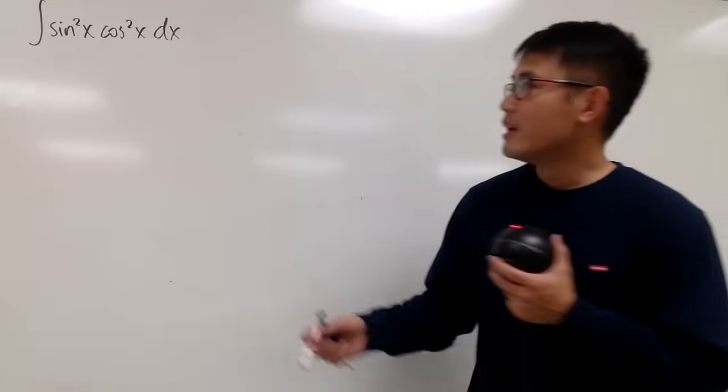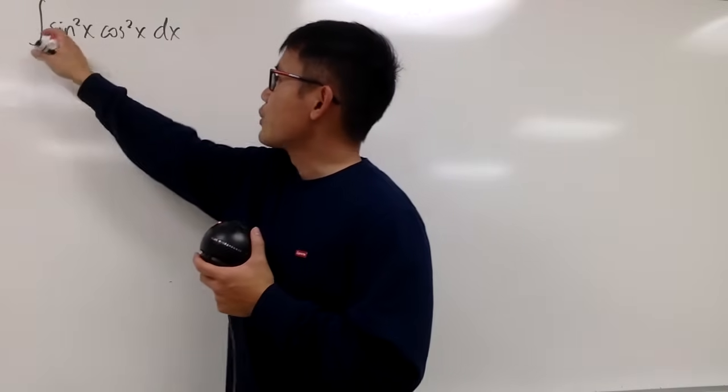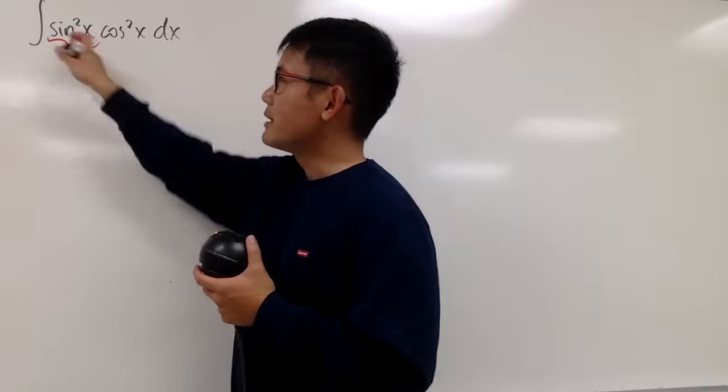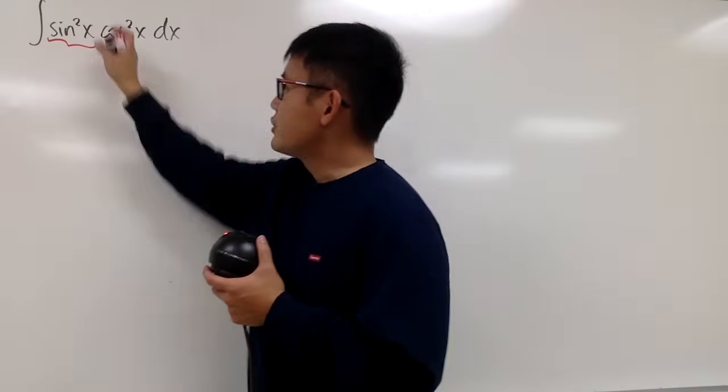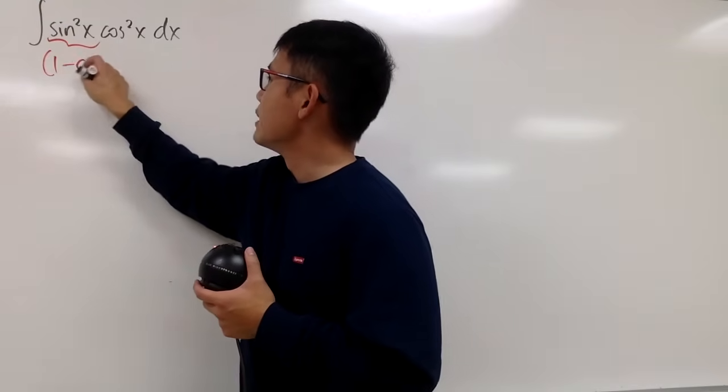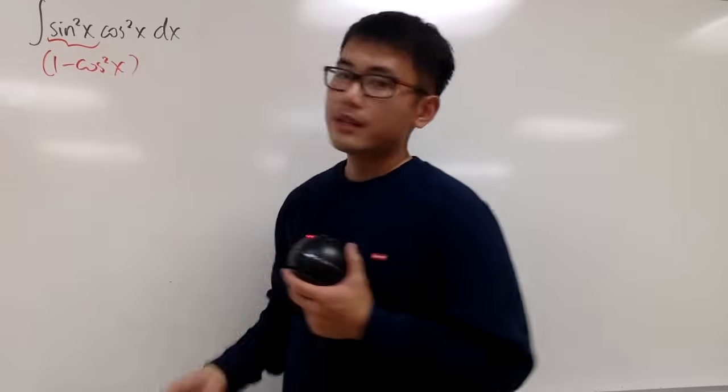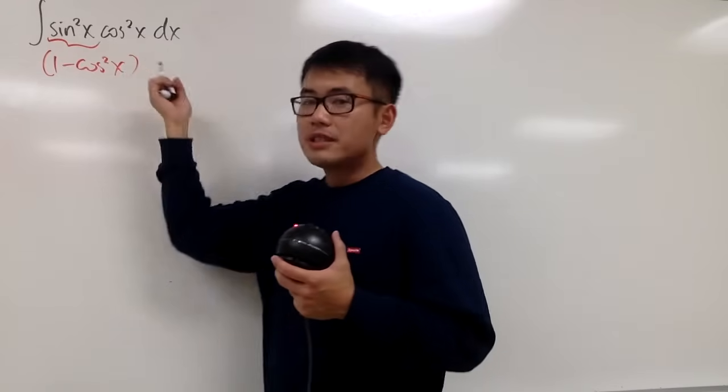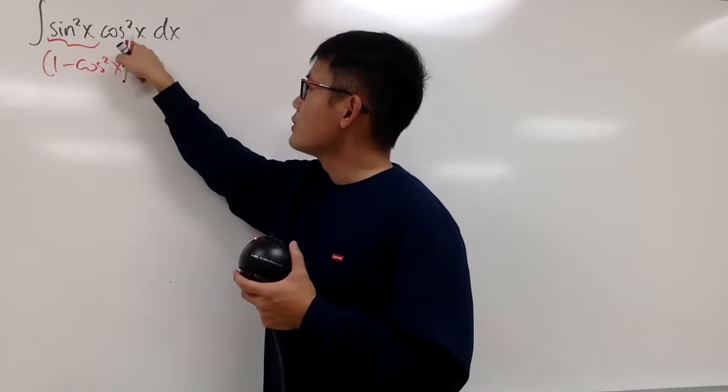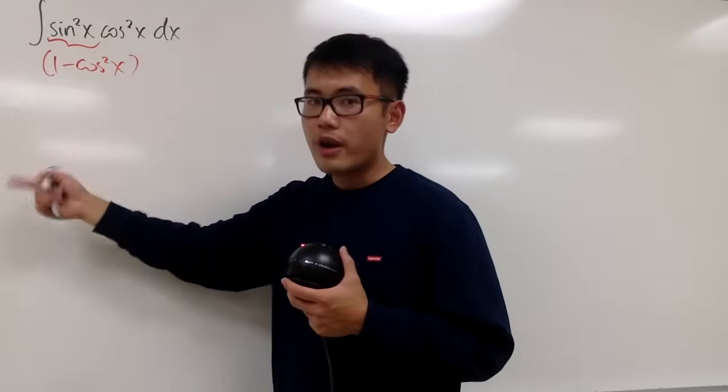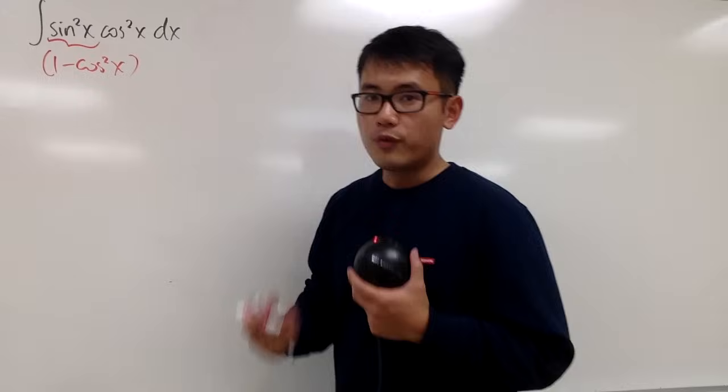First of all, you may be thinking, let's just convert the sine squared x, or maybe the other one, but let's look at the sine squared x. Let's change that to 1 minus cosine squared x. Can we do that? Yes, everything will be in terms of cosine, and you see, cosine squared times 1 is cosine squared, and this times that is cosine to the fourth power x.